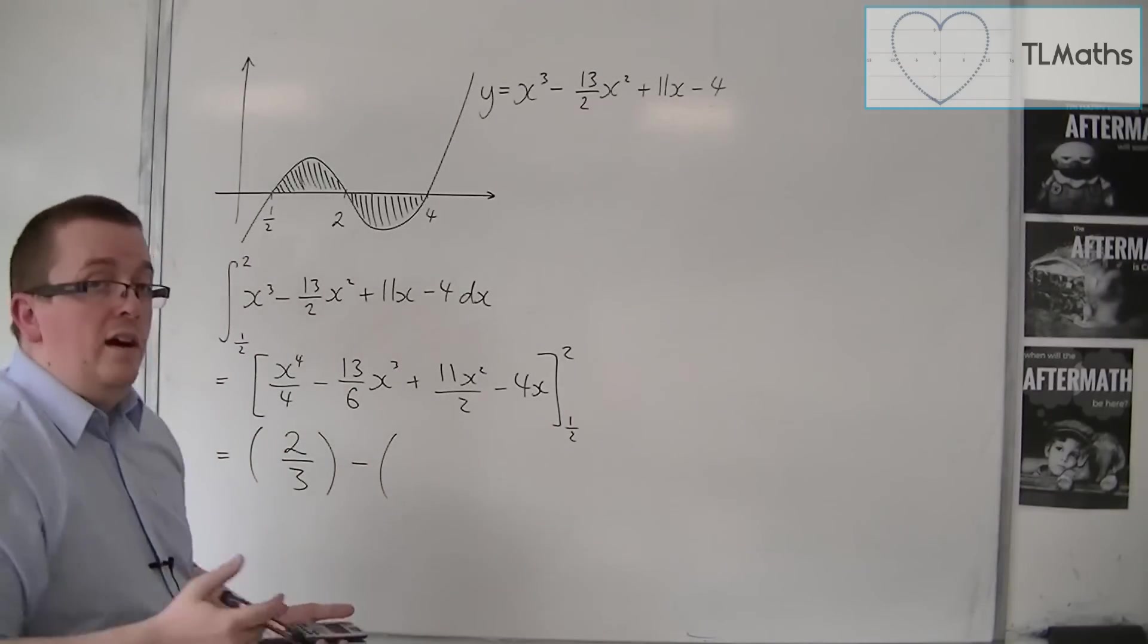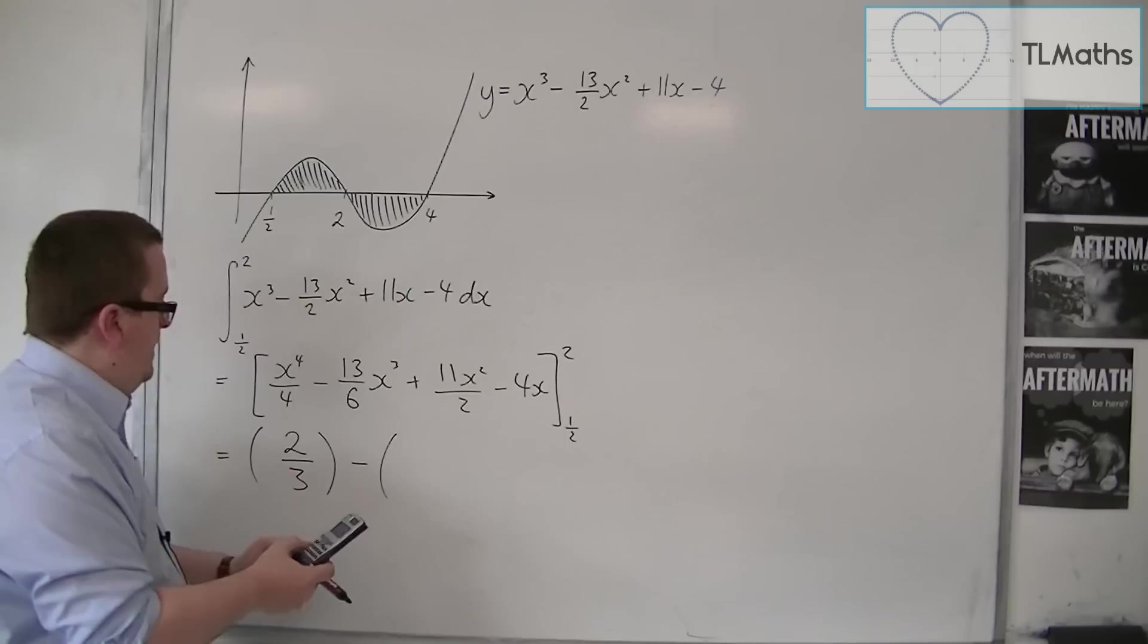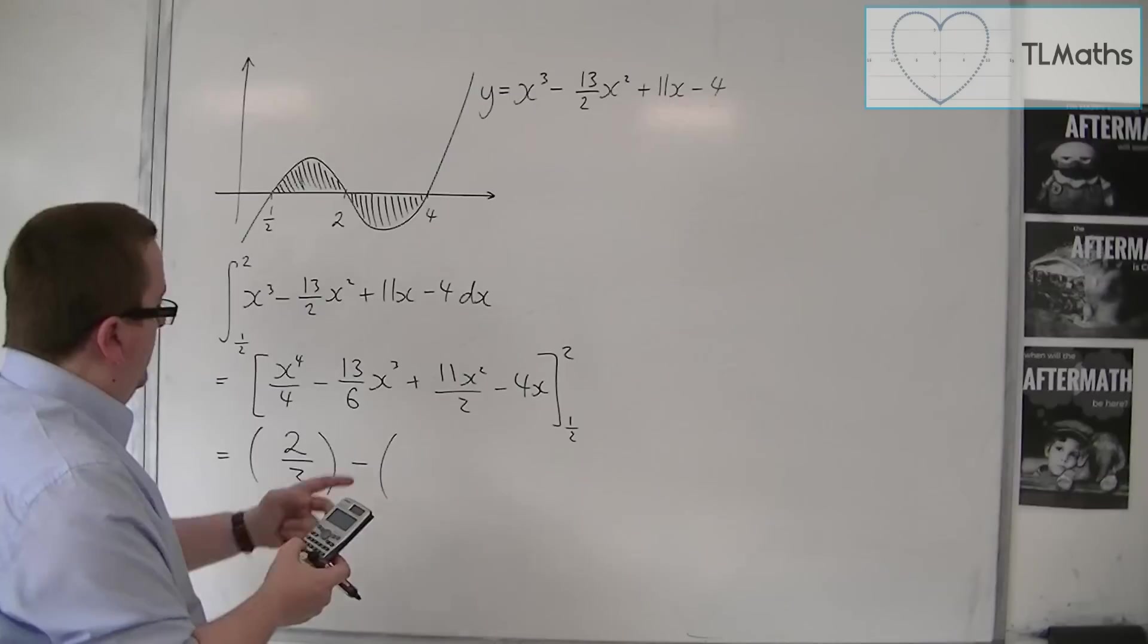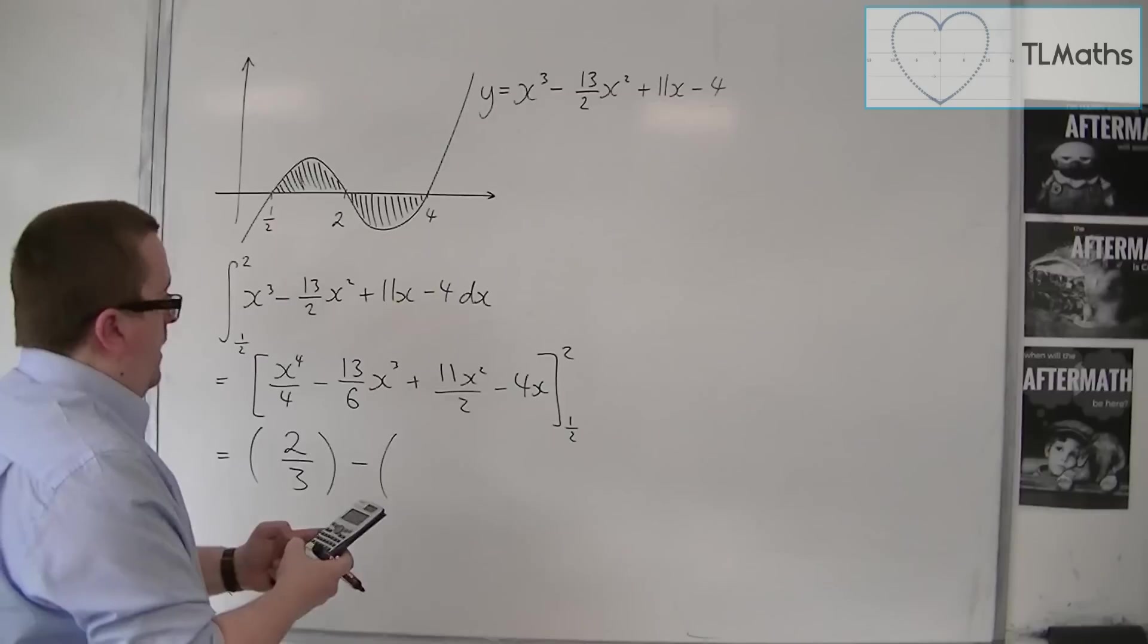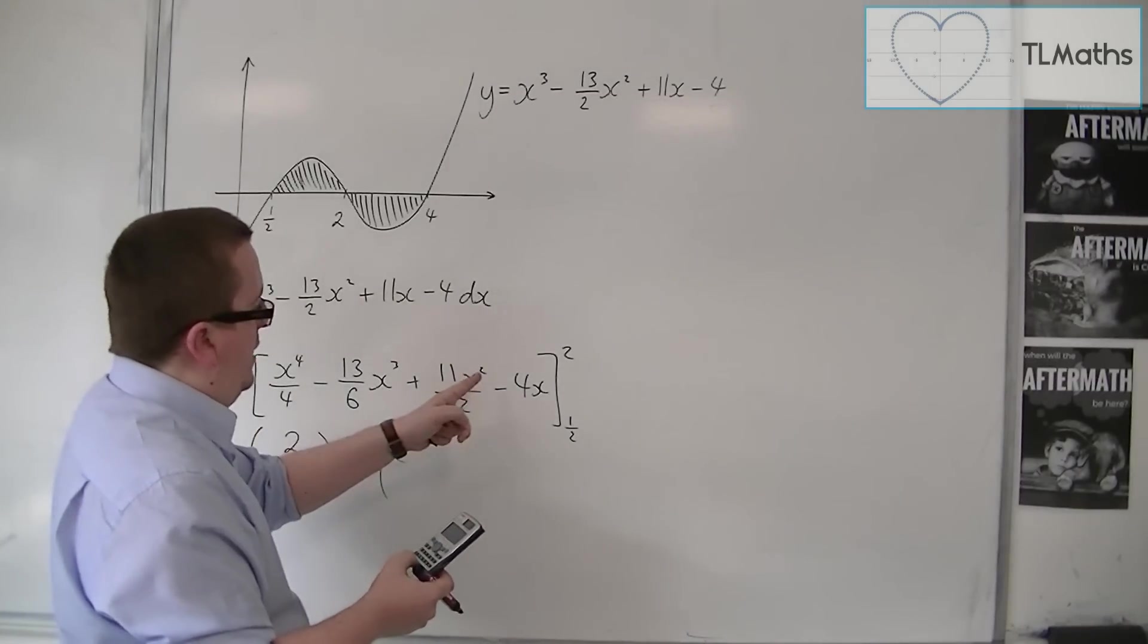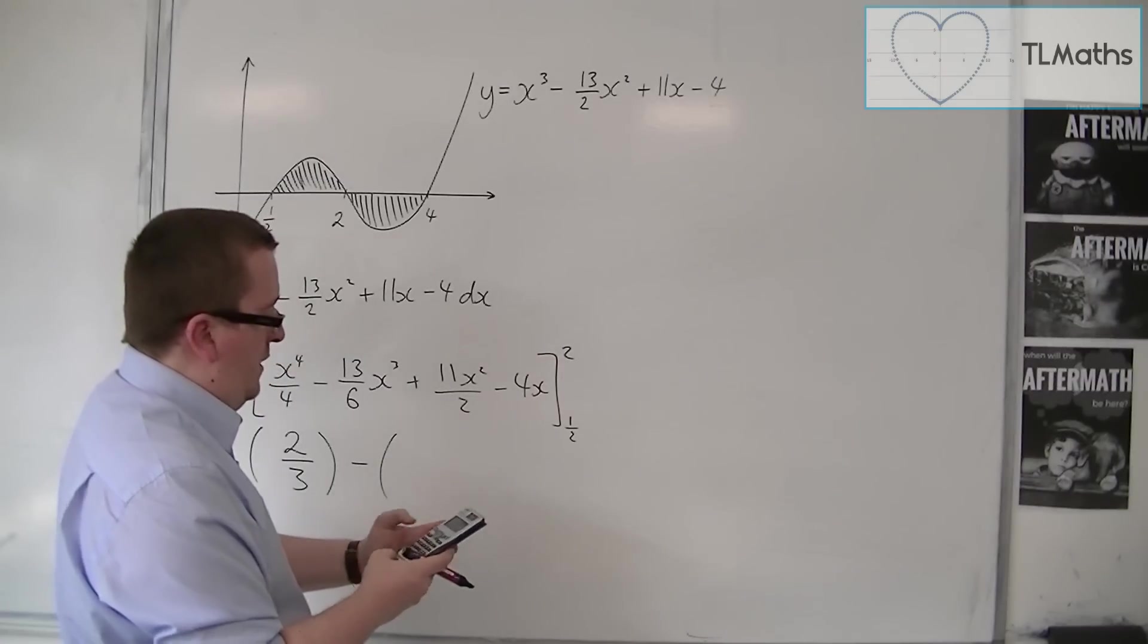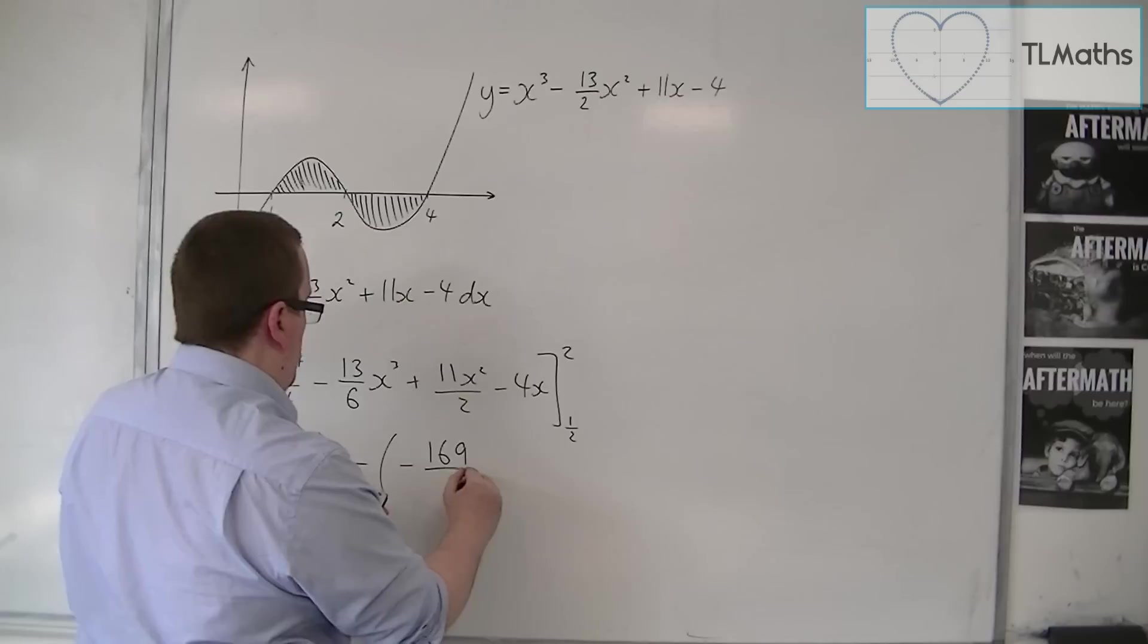Then I'm going to substitute in 1/2. Now be careful when substituting in 1/2. So we're going to get 0.5⁴ over 4, take away 13/6 times 0.5³, plus 11/2 times 0.5². Take away 4 times 0.5, so we get minus 169 over 192.